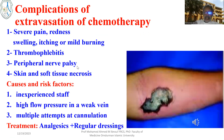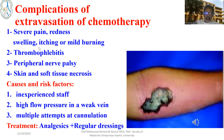Also in the skin itself, extravasation of chemotherapy might cause problems. The symptoms first are: the patient feels pain, redness, swelling, itching, or mild burning at the area of the leakage of chemotherapy. And sometimes they may develop thrombophlebitis or, rarely, peripheral nerve palsy.